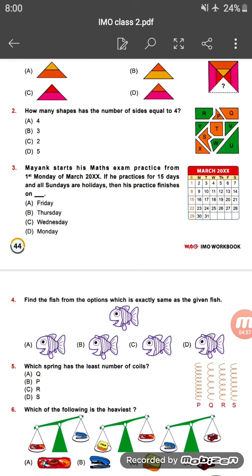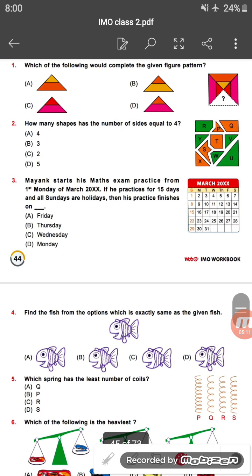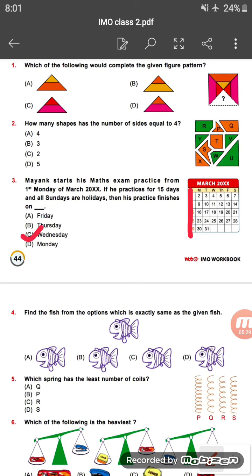If we practice for 15 days and all Sundays are holidays, then counting from the second of March and excluding all Sundays, Mayank will finish after 15 days. The finishing day will be Wednesday, and Wednesday is the correct answer.